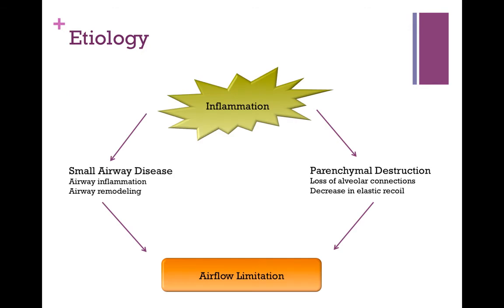Let's describe the primary etiology of COPD and therefore airflow limitation. When we look at a patient such as a smoker or someone exposed to occupational dust or chemicals, this creates inflammation. The inflammation may lead to small airway disease caused by airway inflammation and airway remodeling. We may also see parenchymal destruction, resulting from a loss of alveolar connections and a decrease in elastic recoil, which ultimately leads to airflow limitation.